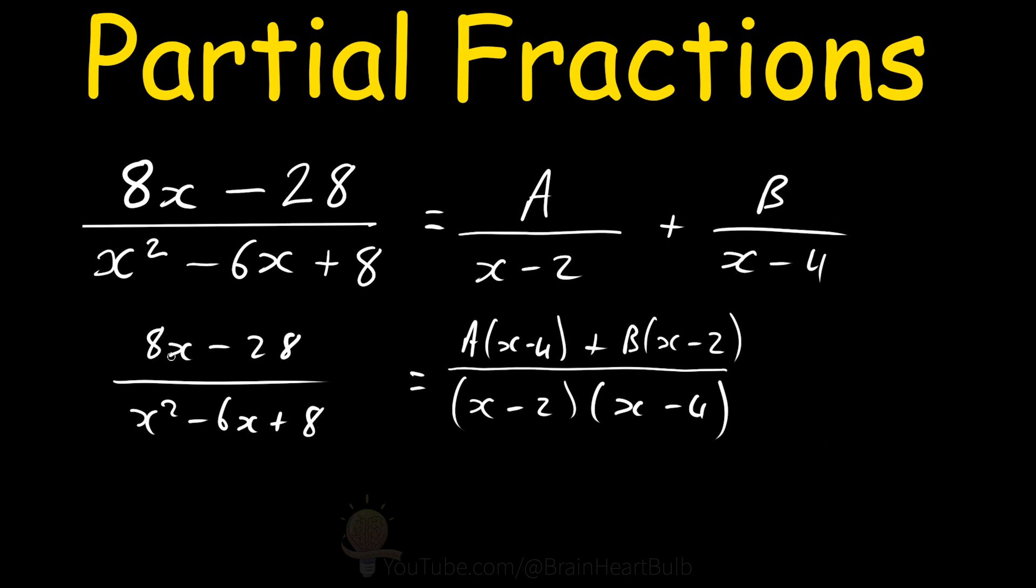And because this is an identity, because the right-hand side of the equation is just an alternative way of writing the left-hand side of the equation, the same is true with the denominators. We're only interested in finding the constants A and B here. So we can ignore the denominator at the bottom and just write out the numerator above.